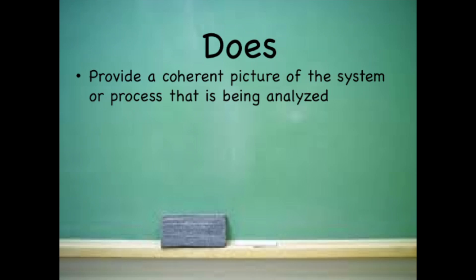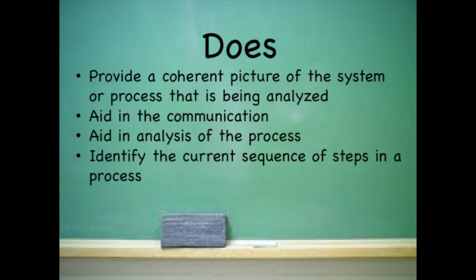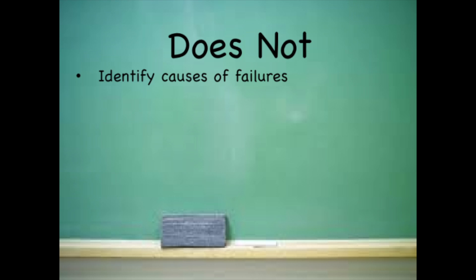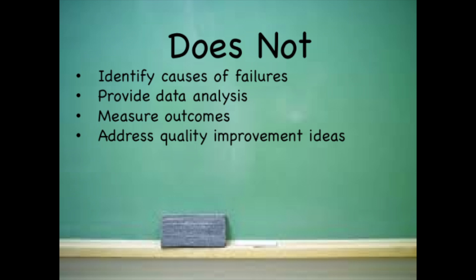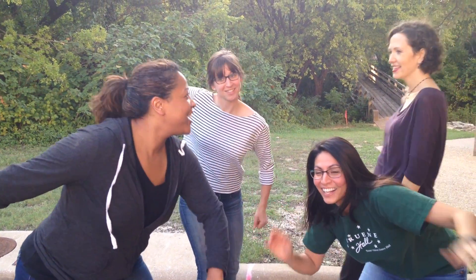Now let's talk about what the process flow map does and does not do. It does provide a coherent picture of the system or process being analyzed. It aids in communication and analysis of the process. It identifies the current sequence of steps in a process, and it signals where you want to collect data. However, the limitations: it does not identify causes of failure, does not provide data analysis, does not measure outcomes, does not address quality improvement ideas, does not compare variables, and does not always include important detail. So that's a process flow map — thanks so much, guys.